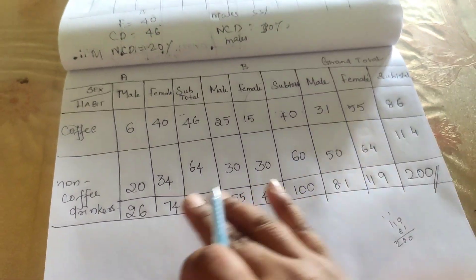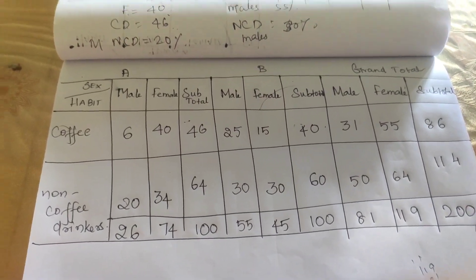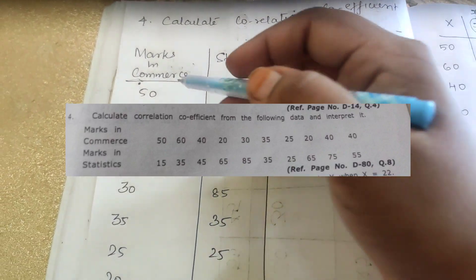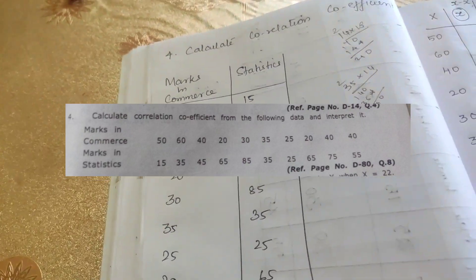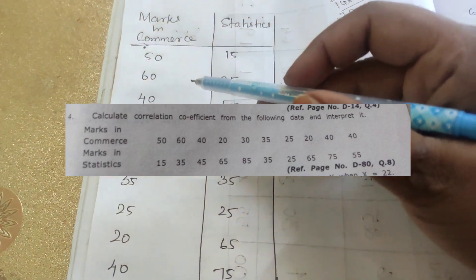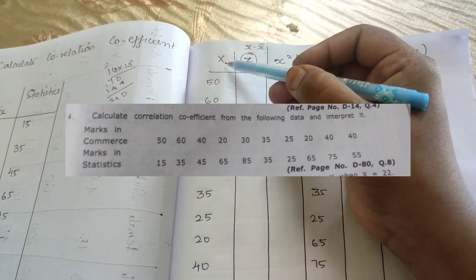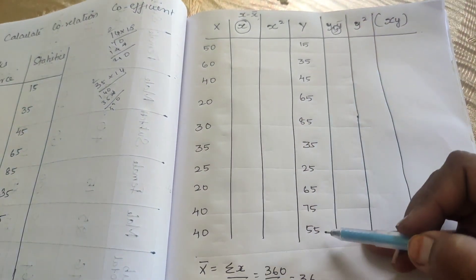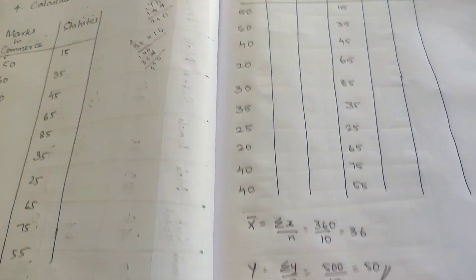Next, we need to calculate the correlation coefficient. The question gives us statistics marks and commerce marks respectively. We write down all the commerce marks as x values and all the statistics marks as y values. When we add all x values, we get 360. Dividing by n, which is 10 observations, we get x̄ equals 36.